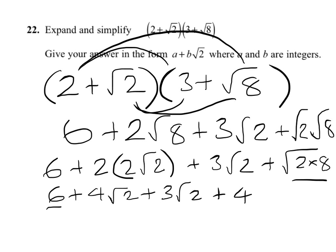So we're getting near the finish now. 6 and 4 is 10. And we've got 4 root 2 plus 3 root 2, which is 7 root 2. So we've given it in the form A plus B root 2. And we can see that A was 10 and B was 7. So that's your answer.